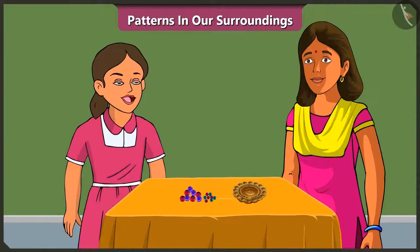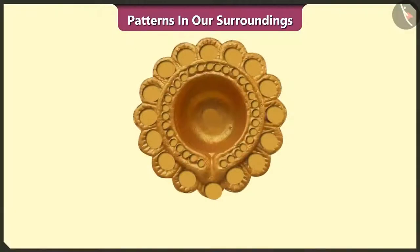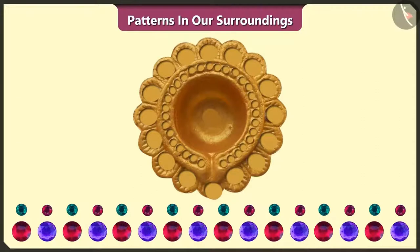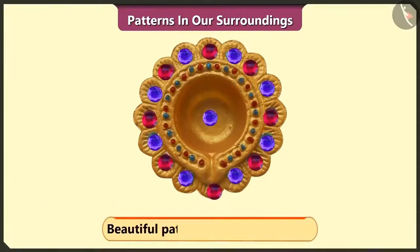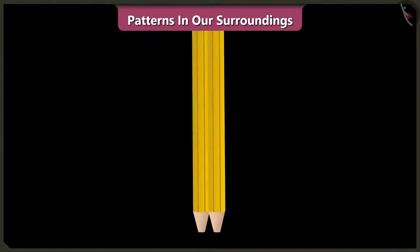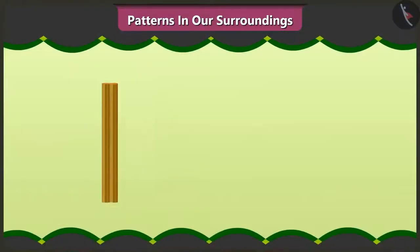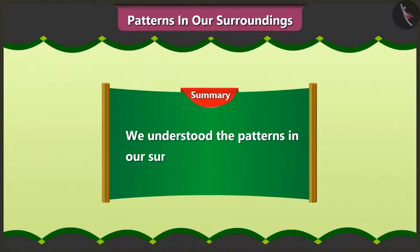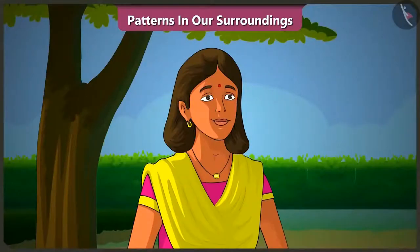Yes, but how will we make it look beautiful? By placing these big and small stones on the diyas. We will use different colored, small and big stones alternately on the diyas to make a pattern. Doing so, now we have a beautiful pattern on the diyas. Yes mummy, now this diyas is looking very beautiful. Vinny, now do your homework. Then we will make patterns using various objects. Friends, today we understood patterns in our surroundings. In the next video, we will learn to make patterns with various objects in our surroundings.